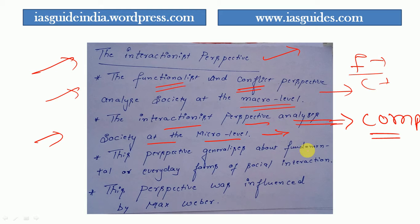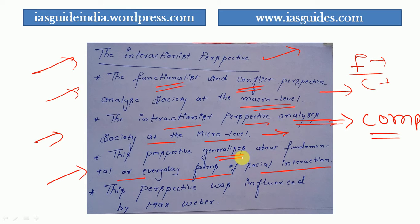Sociologists using this perspective want to know what kind of conversation is going on between father and son, between student and teacher, or between two friends. They analyze those minor details. This perspective generalizes about the fundamentals or everyday forms of social interaction — it is a generalist rather than specialist kind of approach.